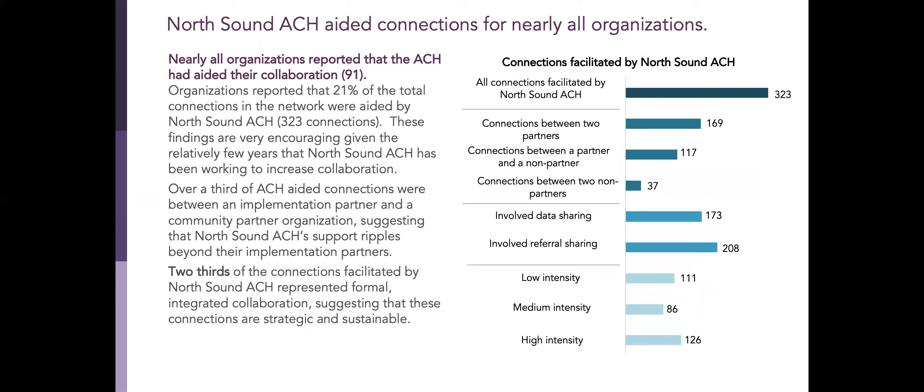We were excited to see the role that the ACH has played in aiding connections in our region. Nearly all organizations — 91% — reported that the ACH had aided their collaboration. This accounted for 21% of the total connections in the region, or 323 individual connections. These are very encouraging findings given the short time frame that the ACH has been actively working with partners in the region. Another exciting finding was that over one-third of the ACH-aided connections were between an implementation partner and a non-contracted community partner, suggesting that our support ripples beyond those with whom we are contracted for Medicaid transformation project implementation.